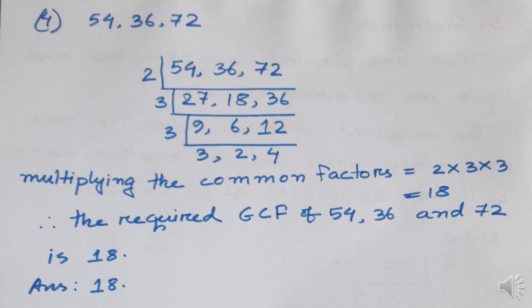For number 4, we have 54, 36, and 72. Dividing by 2: we get 27, 18, and 36. Dividing by 3 gives 9, 6, and 12. Dividing by 3 again gives 3, 2, and 4. The total factors found are 2, 3, 3, and remaining 2 and 4. We choose the common factors: 3 appears multiple times and 2 appears as well. Therefore, the required GCF of 54, 36, and 72 is 18. The answer is 18.